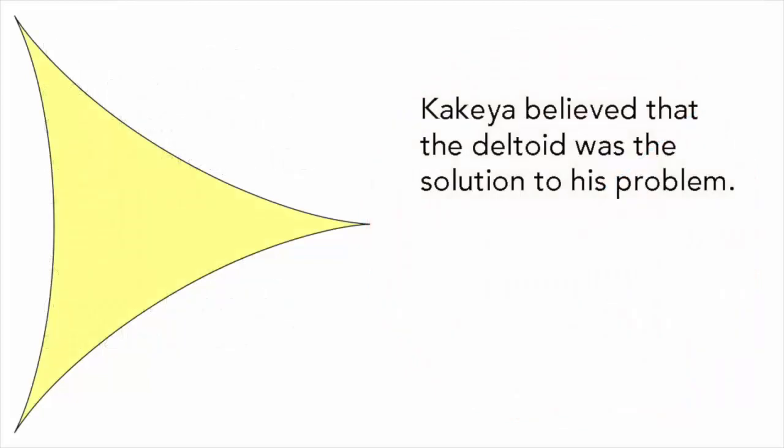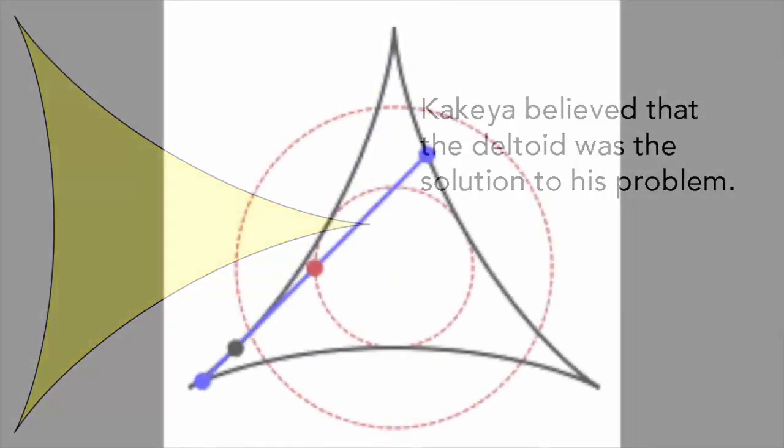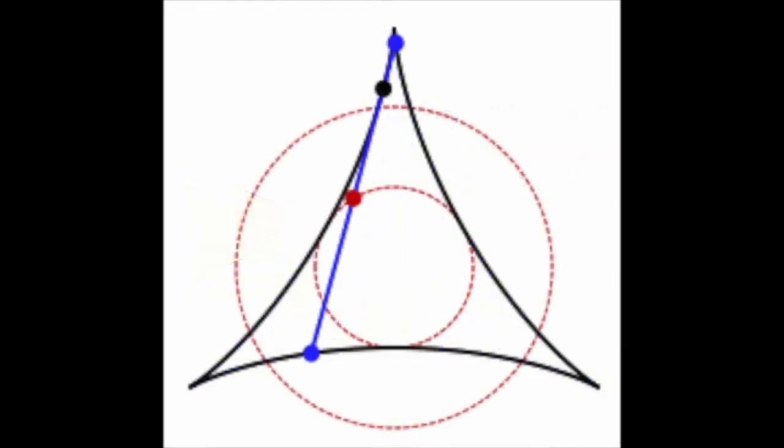Kakeya explored various possibilities until he hit upon the deltoid, a shape that looks like an equilateral triangle but with sides that bulge inwards. A needle, or a straight line of unit length, can pivot completely around inside this shape while only marking out an area of 0.393 square units.